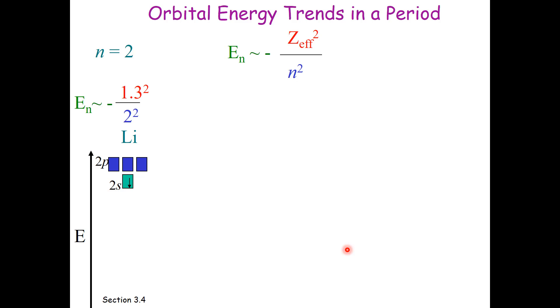What about orbital energy trends in a period? The reason we're covering orbital energy trends is because those will have an impact on electronegativity and ionization energy. These are proportional to minus z-effective-squared over n-squared.